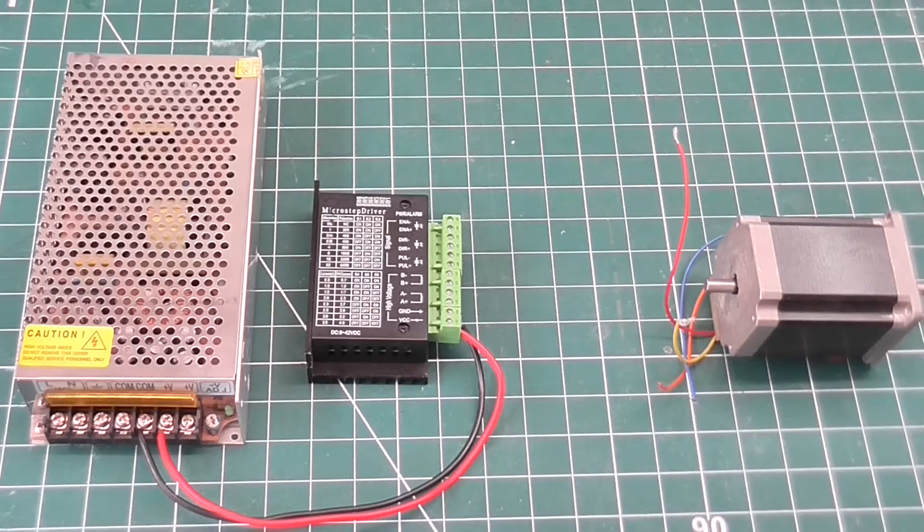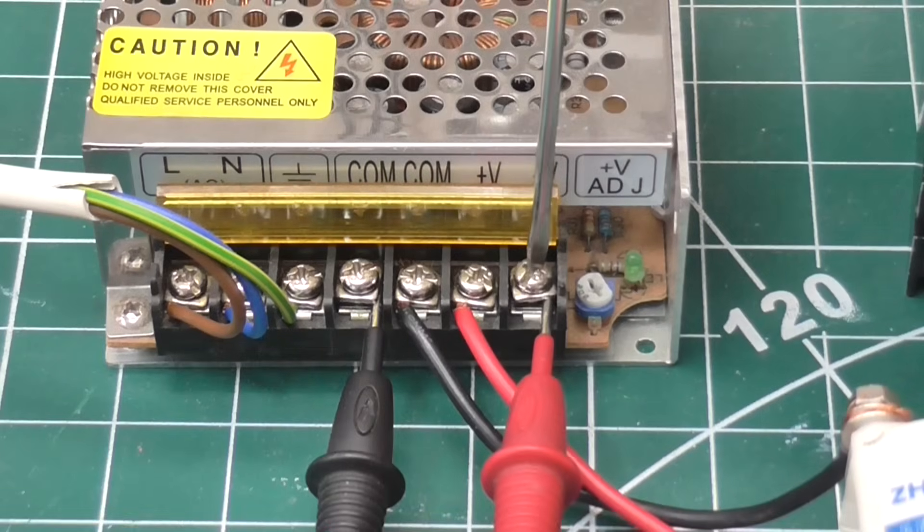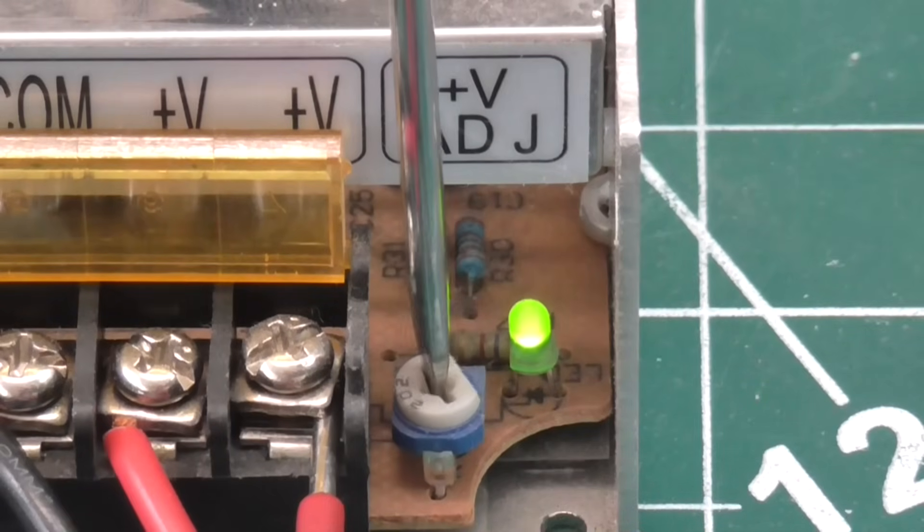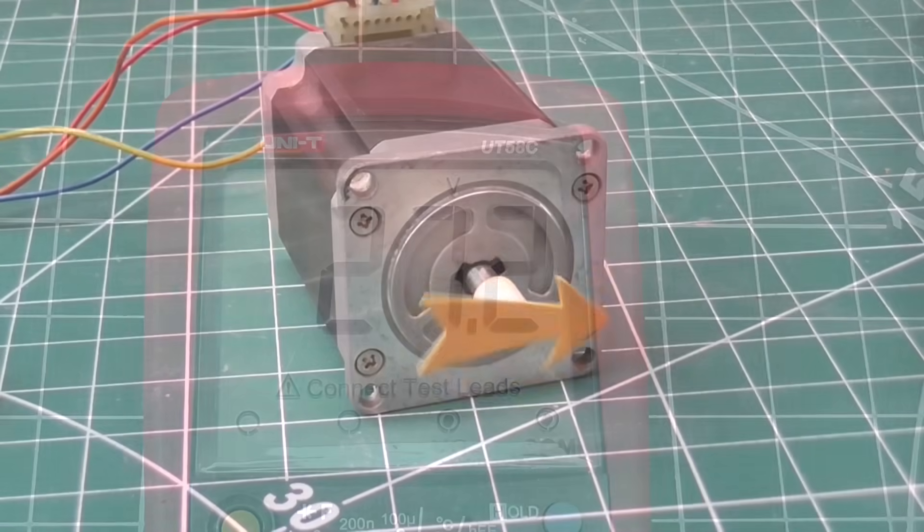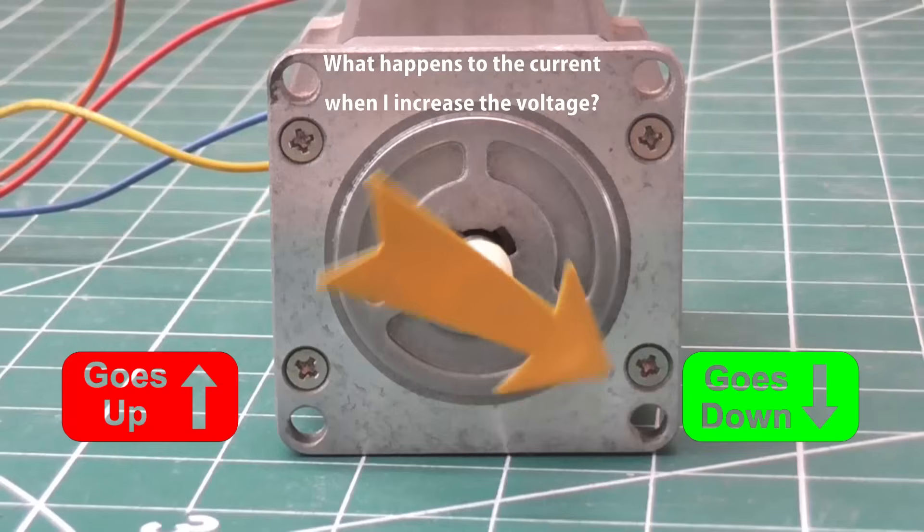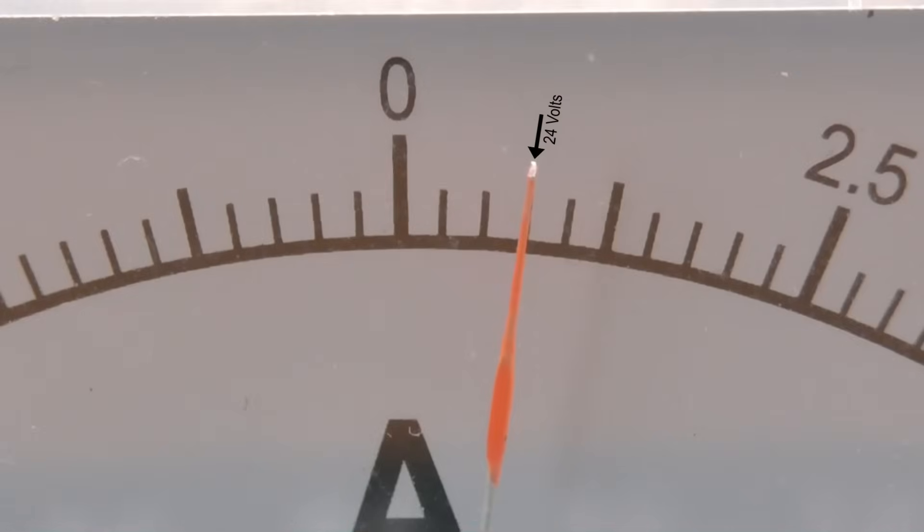So what would happen if I were to use a higher voltage? I can adjust the output of this supply, though not by very much. What do you think will happen to the current as I increase the voltage? That's right. It goes down, not up. The motor still draws the same amount of power regardless, so the current and voltage balance out. If one goes up, the other must go down.